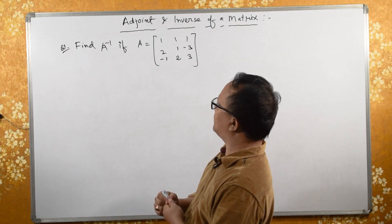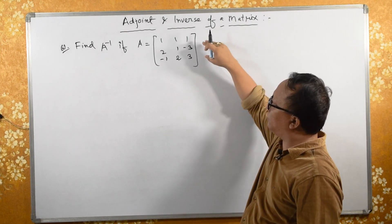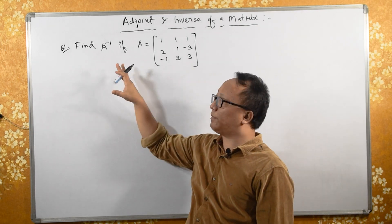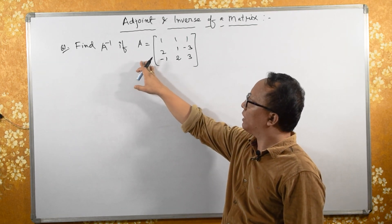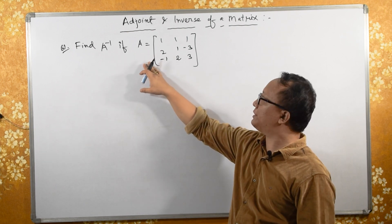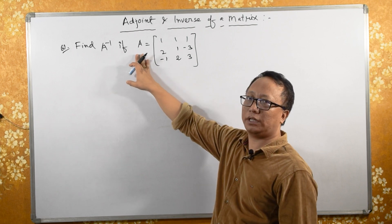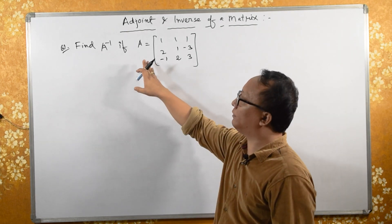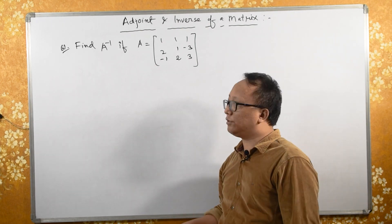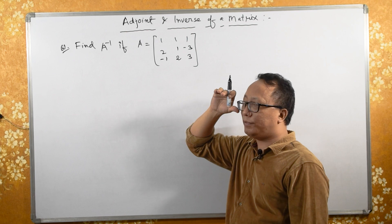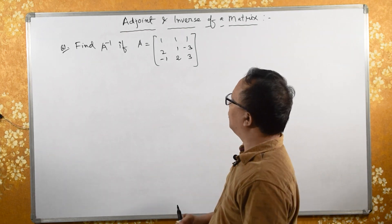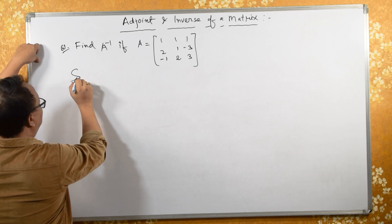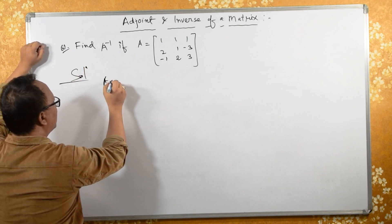Now let's find the value of A inverse for a 3 by 3 example. It is given that A is a 3 by 3 square matrix with 3 rows and 3 columns. In order to find A inverse, we need to find the adjoint of A and the determinant of A. Firstly, we find the determinant of A — it should not be equal to 0.